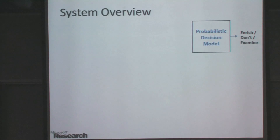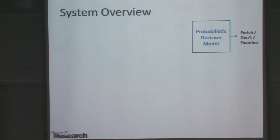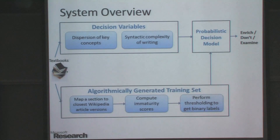The model output is one of three possibilities: augment, don't augment because it's already written well, or a third possibility where we are not sure and it needs further examination by an expert. There are two classes of variables, and I will describe how we generate the training data.